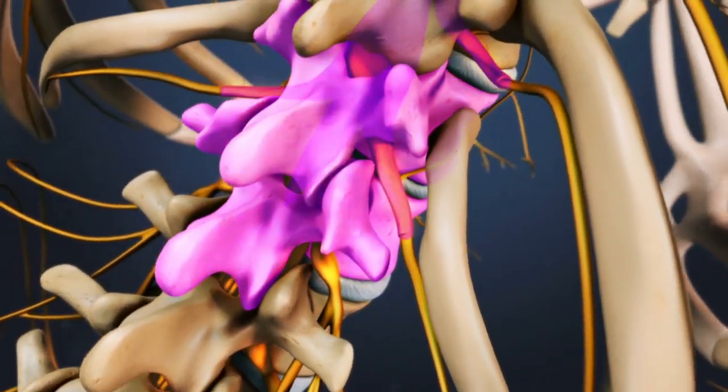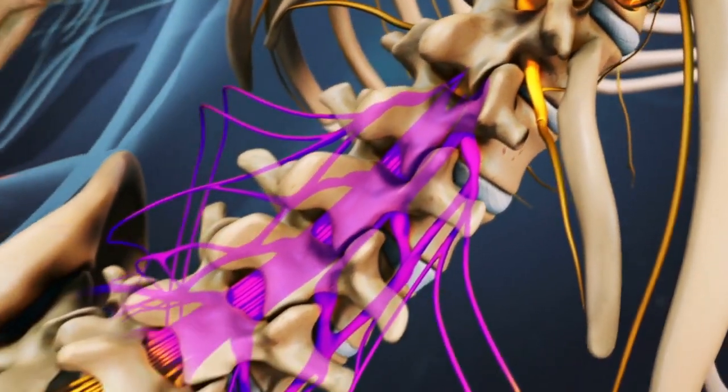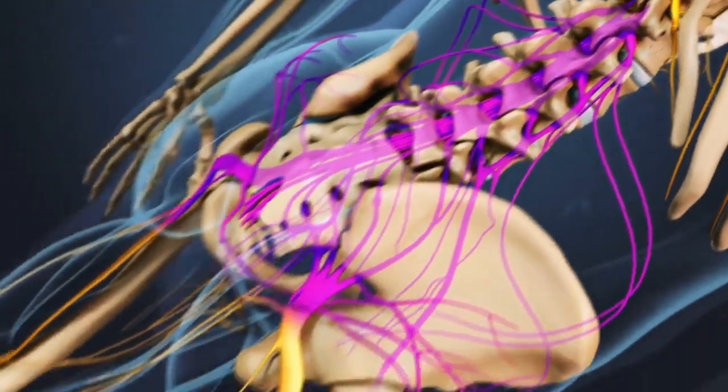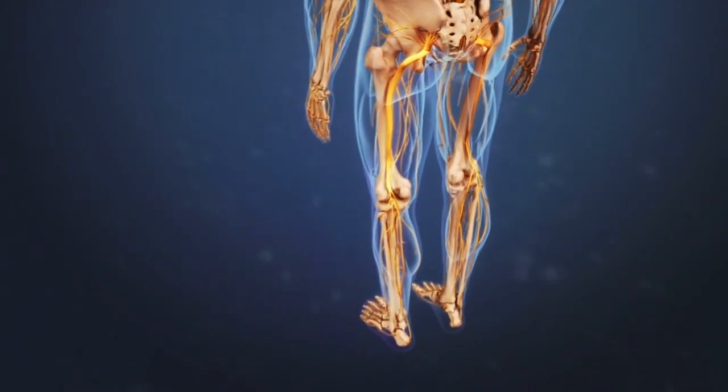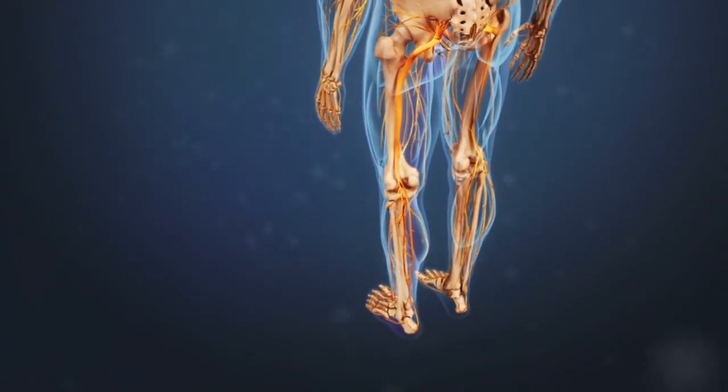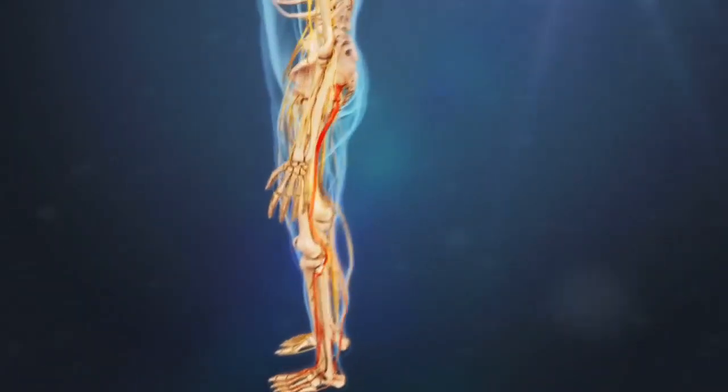At this segment, nerve roots branch out from the spinal cord, running from the lower back through the back of the leg and down to the toes. Some lower back conditions may compress these nerve roots, resulting in pain that radiates to the lower extremities, known as radiculopathy.